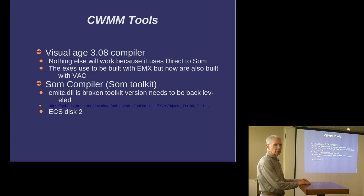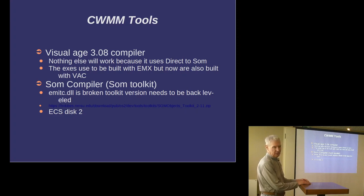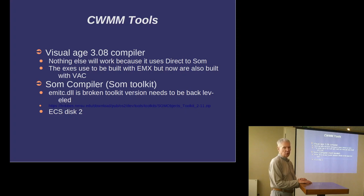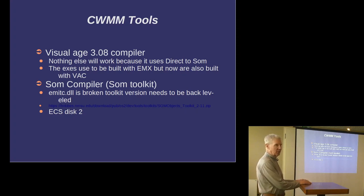I'm going to talk about the biggest problem with the multimedia classes: nobody could figure out how to build them. Part of the reason was that you had to know that only Visual Age 3.08 would work, because it used something called DirectSOM, which was an experimental piece put into VAC 3.08 and then subsequently taken out in VAC 3.65. So that was the biggest stumbling block — getting all of this to build — knowing that you were stuck with this one compiler.